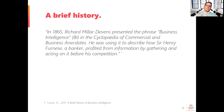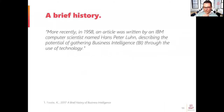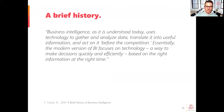Brief history — the point here is that business intelligence is not a new concept. In 1865 the term was coined; it's really a way to gather information and use it as a competitive advantage. More recently, IBM coined the term as using technology to do this. Most recently, business intelligence as it's understood uses technology to gather and analyze data, translate it into useful information, and then act on that. The modern version of BI focuses on technology as a way to make decisions quickly and efficiently based on the right information at the right time.